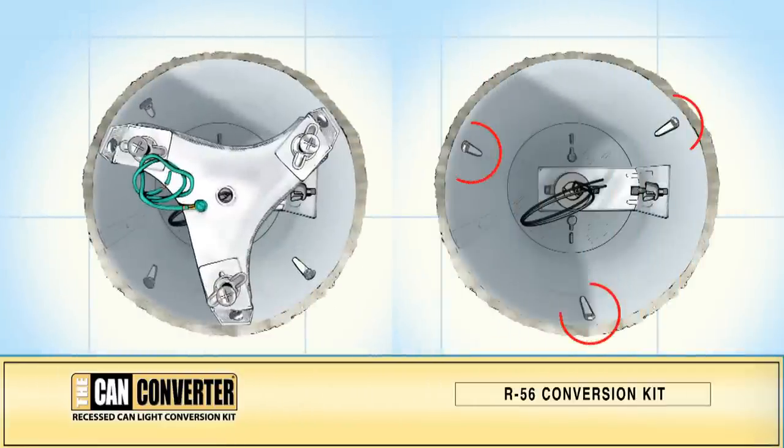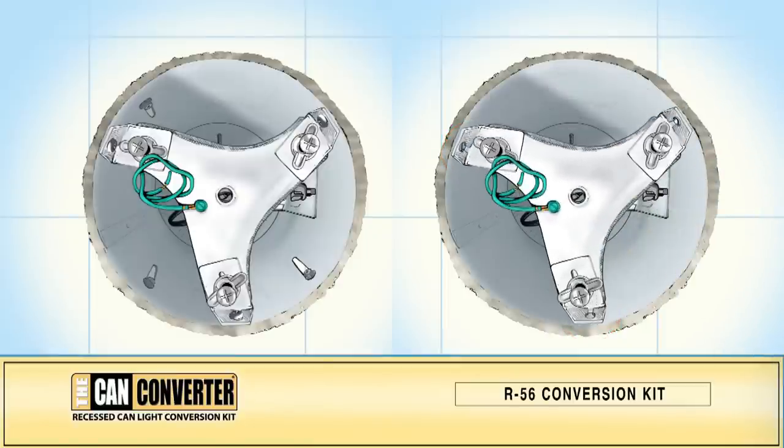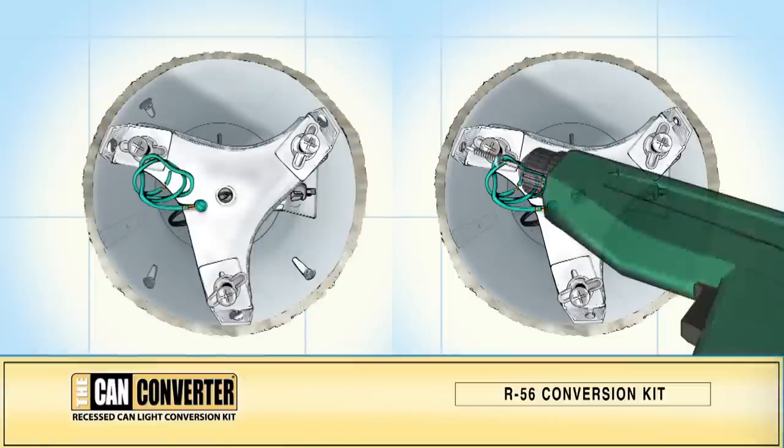If your existing CAN's mounting screws are in a triangular position, remove them and replace them with the self-tapping screws. Use the existing screw holes to mount the offset brackets.